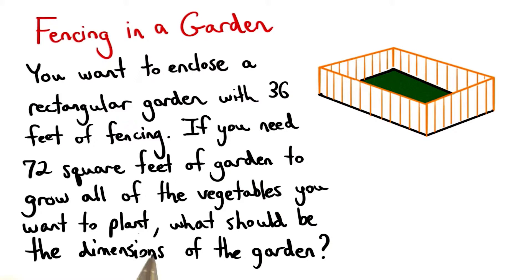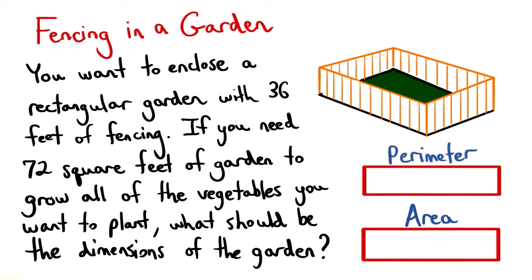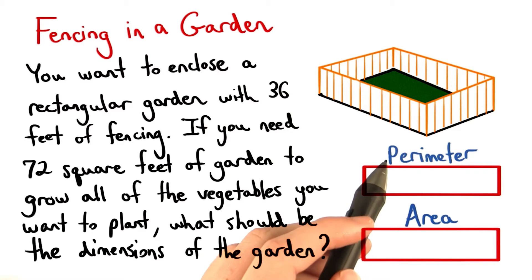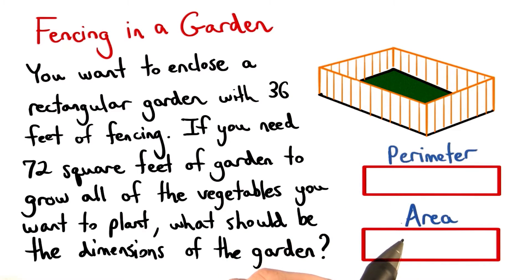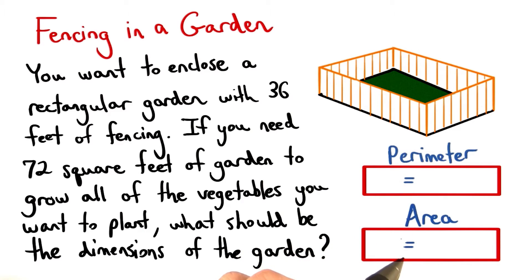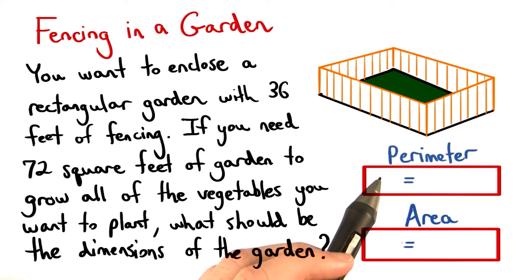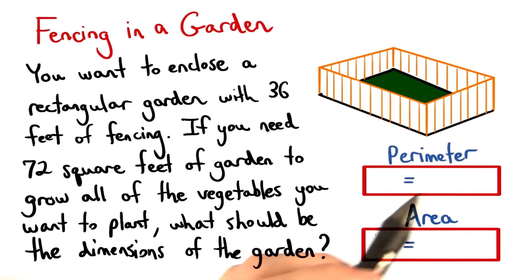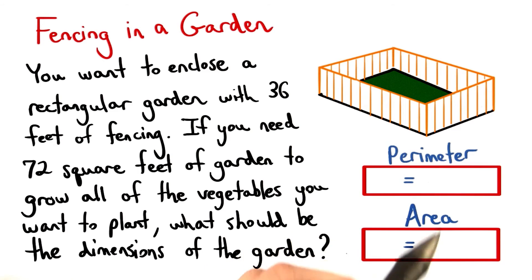I don't want to find the dimensions of the garden just yet. Let's do this problem in a couple steps. Start solving this problem by writing two equations for the perimeter and the area. Since you want to write two equations, these boxes need to have an equal sign in them — some expression on the left, and then some expression on the right.